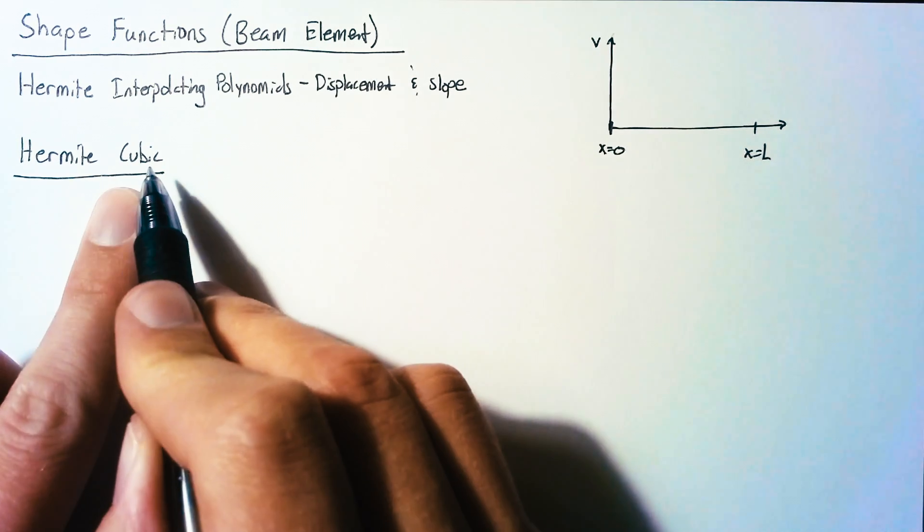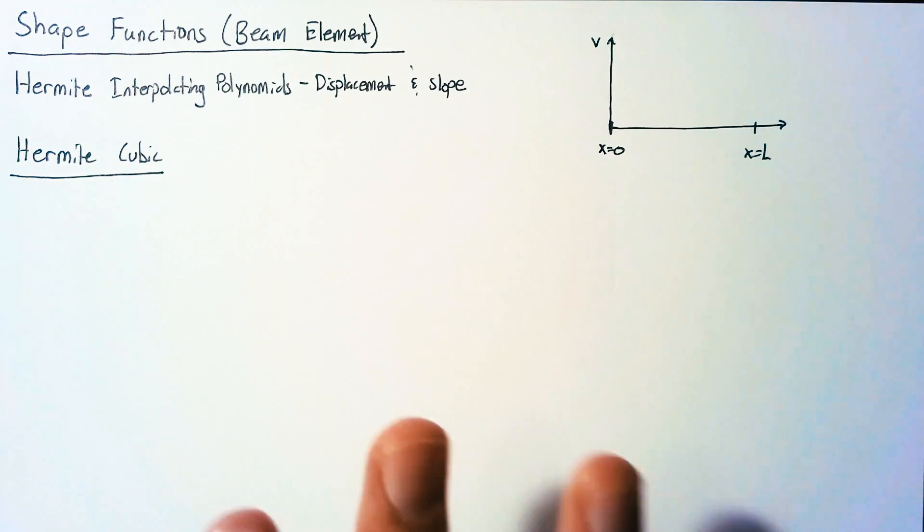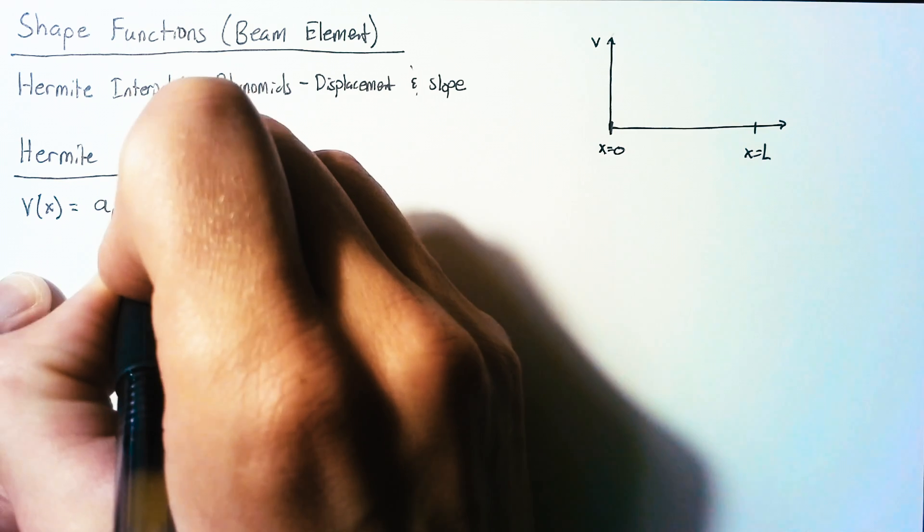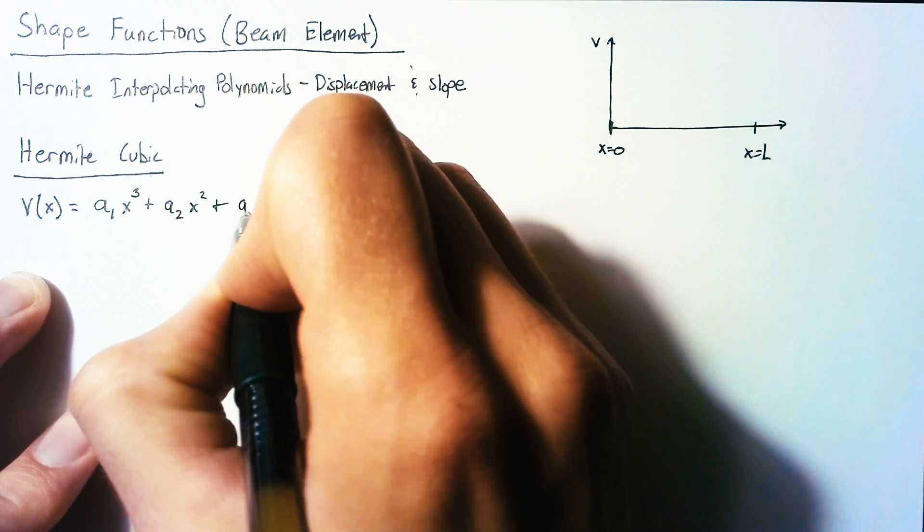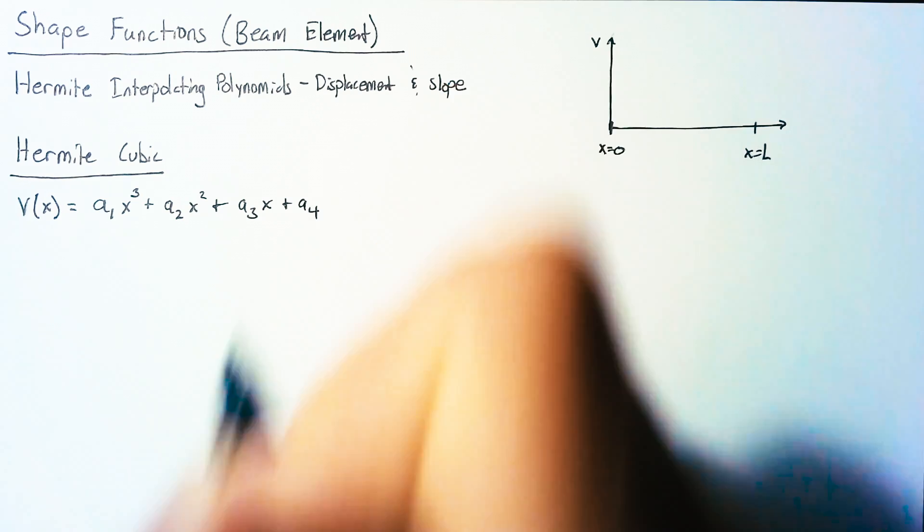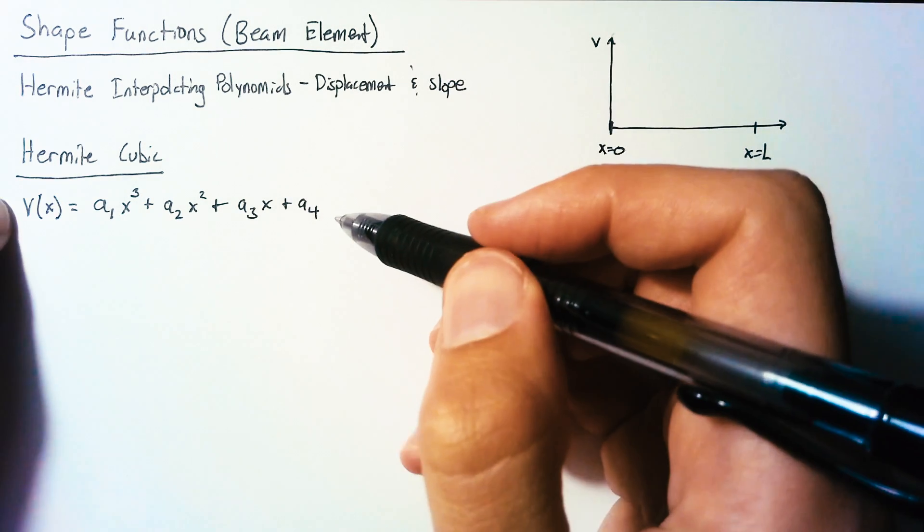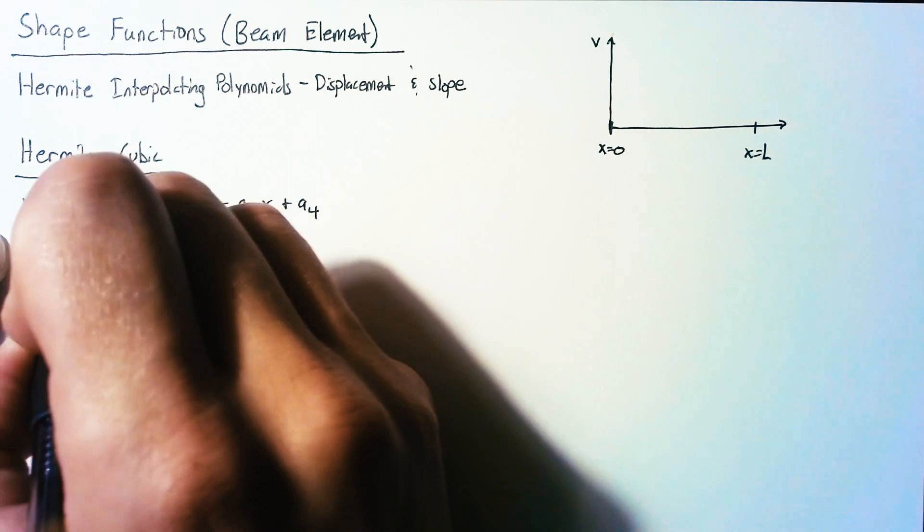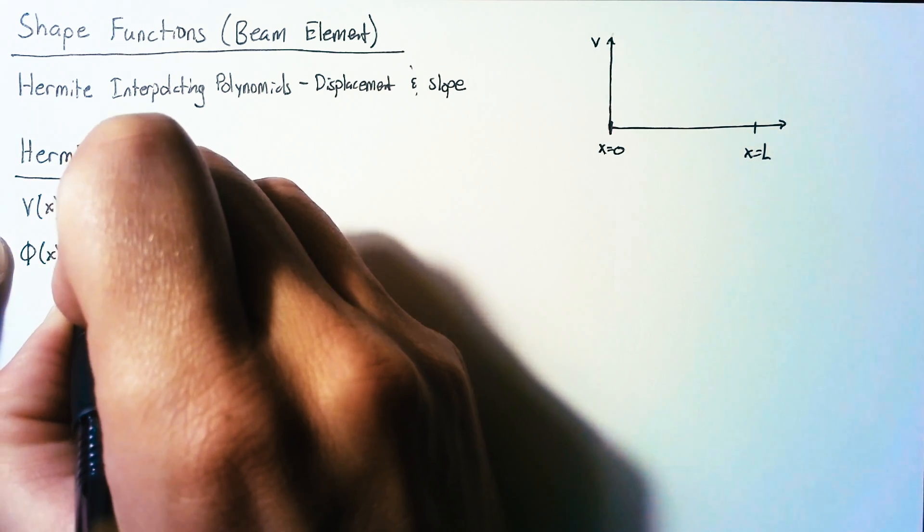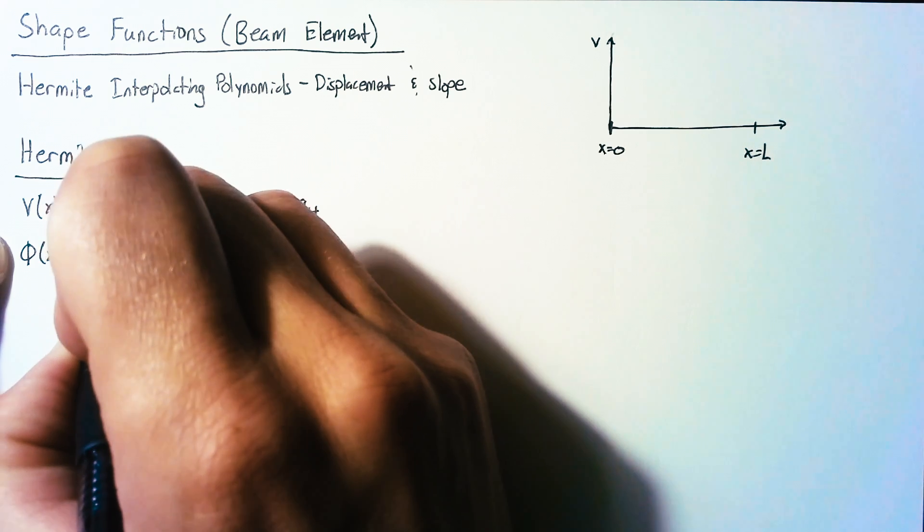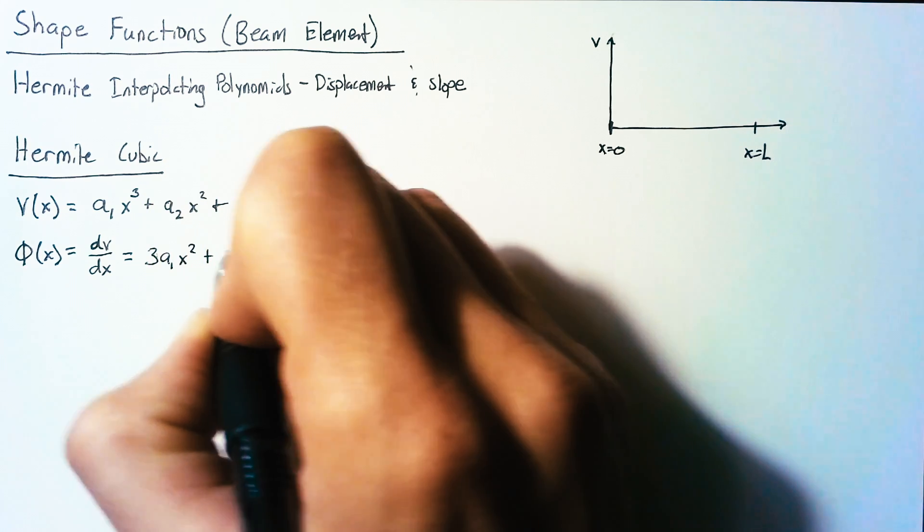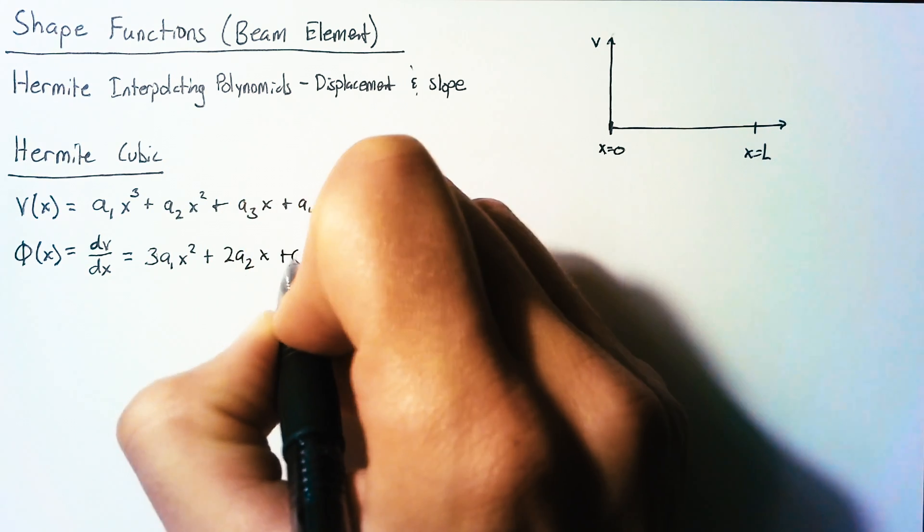We have to go to the cubic because we have four degrees of freedom that we have to play with. So the function we're going to start off with is just our coefficients multiplied by our x-values. But we care not only about our position, we also care about slope. And our rotational displacement is simply the first derivative of our translational displacement. So we end up with 3a1x squared plus 2a2x plus a3.